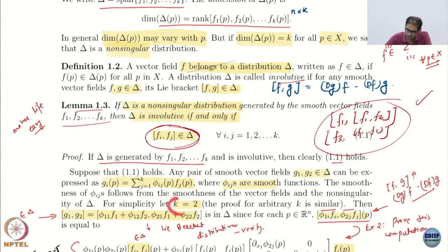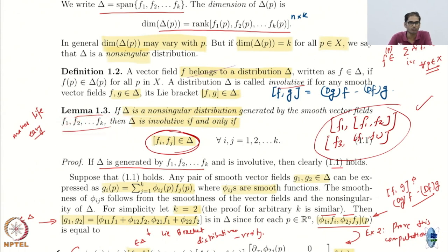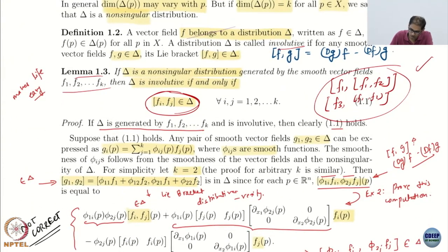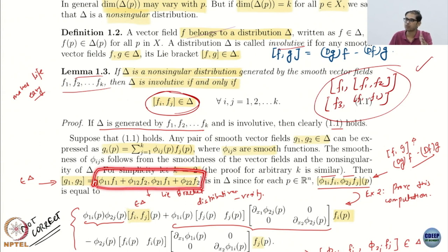For simplicity, if you assume k equal to 2 — that is you have only two vector fields f1 and f2 forming the distribution — just so that the proof looks easy. Then what do you have? You have that the Lie bracket of G1, G2 is actually the Lie bracket of this expression, because I have written G1 as phi_11 f1 plus phi_12 f2 and G2 as phi_21 f1 plus phi_22 f2.